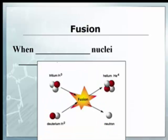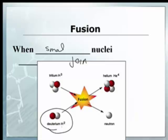Fusion is a little bit different. This is when small nuclei join — they fuse together. This is what happens in the sun. We have deuterium, hydrogen, mixed with tritium. They combine and make helium, and they kick off a neutron. They also lose a little mass, and when they lose that little bit of mass, there are lots and lots of energy.